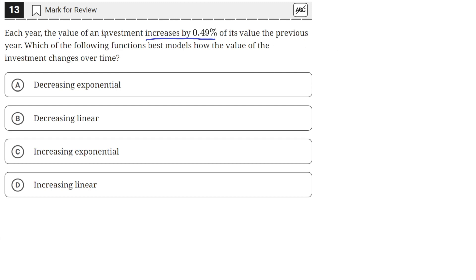Okay, so the value of this investment changes by 0.49% every year. The function that would best model this would have to be an increasing function, because the value of the investment is increasing. We can rule out the decreasing answer choices since the value is increasing, not decreasing.